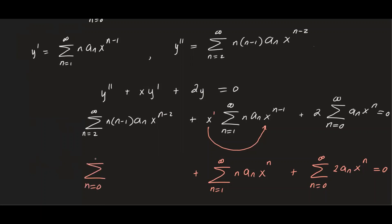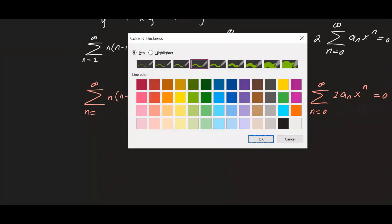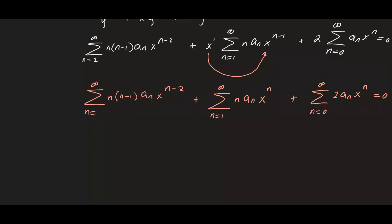There's a typo to fix: in the first summation, n should start at two. So the first sum starts at two, the second starts at one, and the last starts at zero. Now we want to get the same power of x across all summations, so we'll shift the indices.